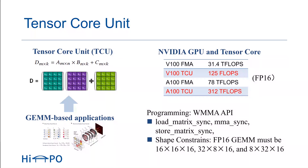The tensor core of the Volta GPU can be programmed at the warp level with the CUDA warp matrix multiply and accumulate API, which is the WMMA API. This API provides specific functions to load the input matrix, perform the MMA operation, and store the result matrix. In particular, the size of the matrix is constrained to several specific settings.